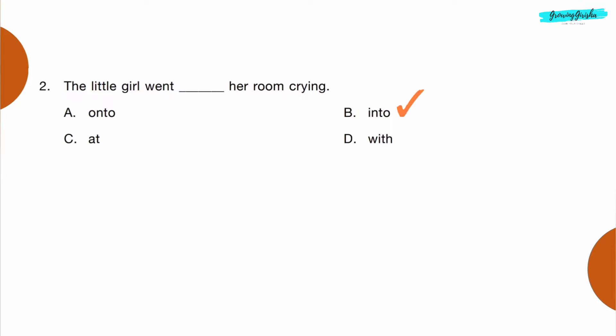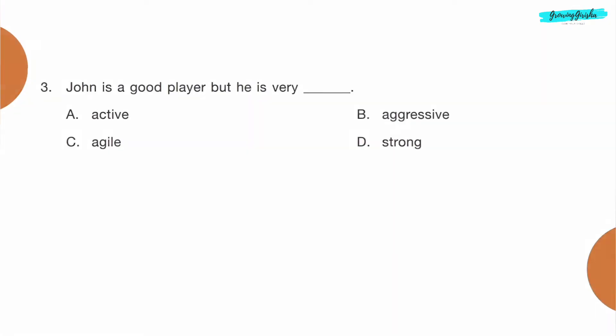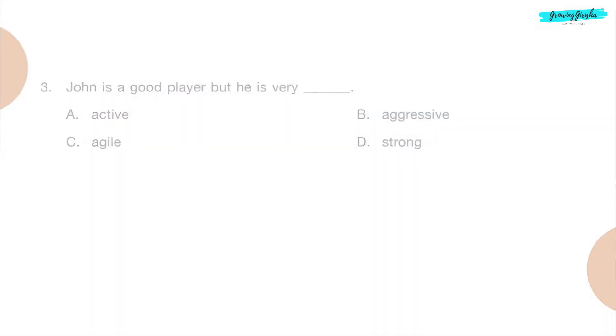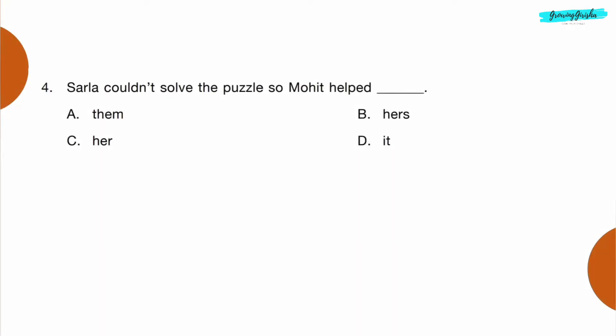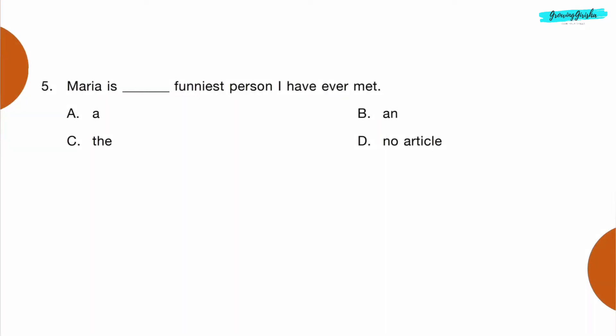Question 3: John is a good player but he is very dash. Option B: aggressive. Question 4: Sarla couldn't solve the puzzle so Muhit helped dash. Option C: her.